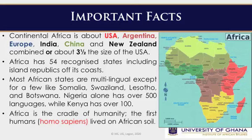Africa is also said to be the cradle of humanity. The first humans — that is, Homo sapiens — lived on African soil. There is a very interesting quotation from Professor Ali Mazrui in his book, 'The African Condition: A Political Prognosis,' published in London by Heinemann in 1980. Professor Mazrui makes this interesting observation about Africa.